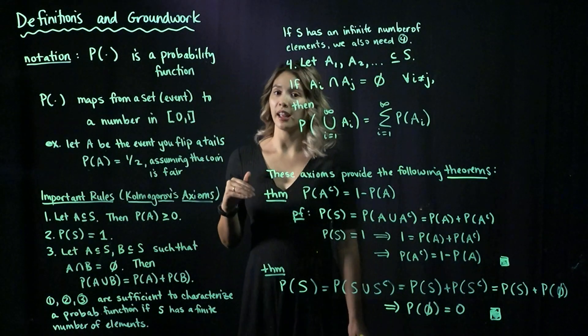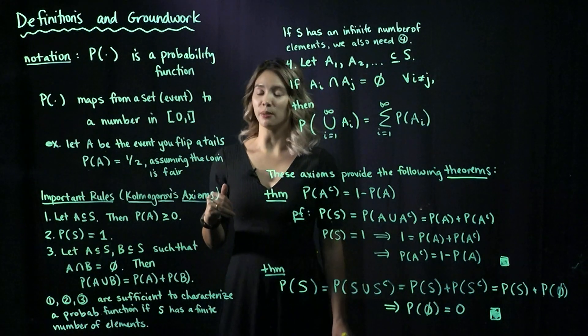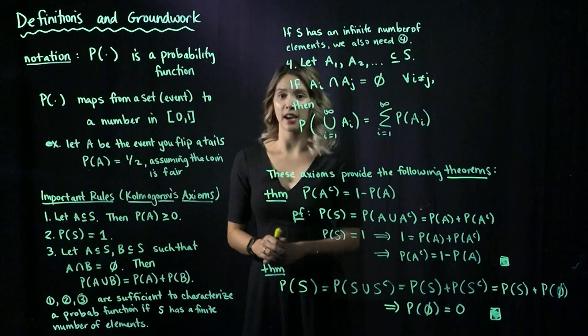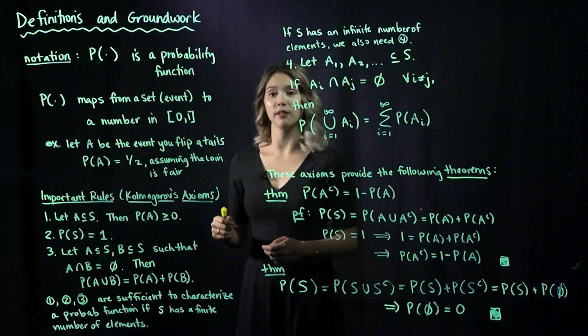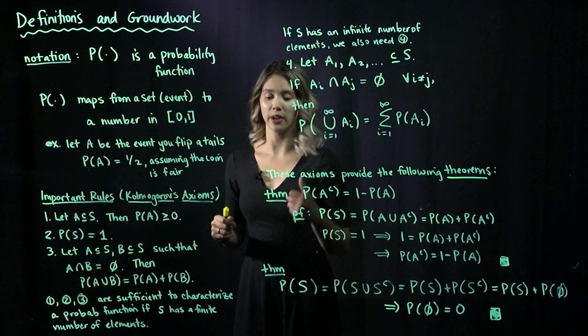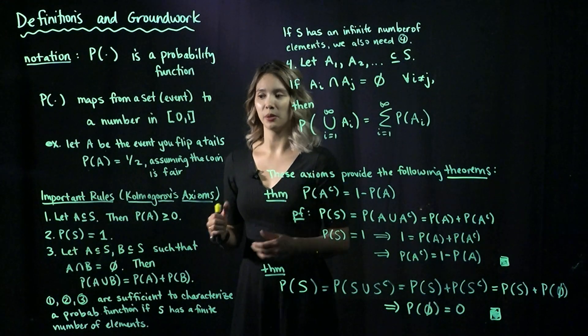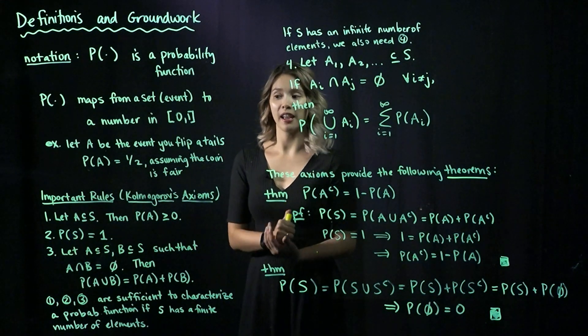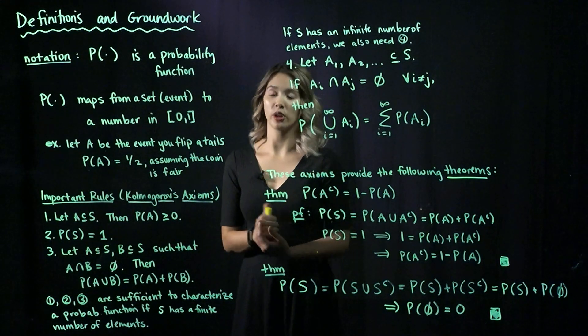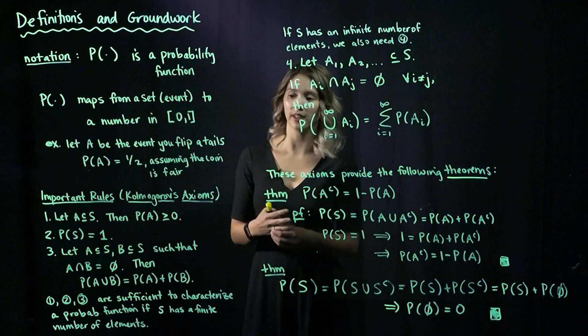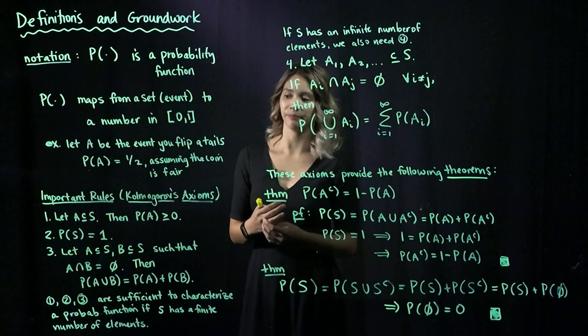Looking at a basic example: let A be the event that you flip a coin and get a tail. Then the probability of A is going to be one half, assuming that the coin is a fair coin.